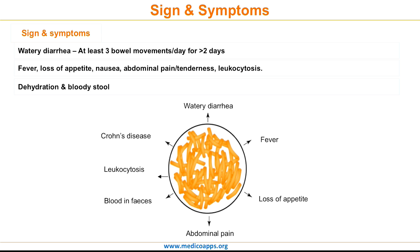All these symptoms — watery diarrhea, fever, loss of appetite, abdominal pain, blood in feces, and leukocytosis — point towards the diagnosis of non-specific colitis. When present in a patient who has undergone prolonged antibiotic therapy of more than two or three weeks, they point towards the diagnosis of Clostridium difficile infection.